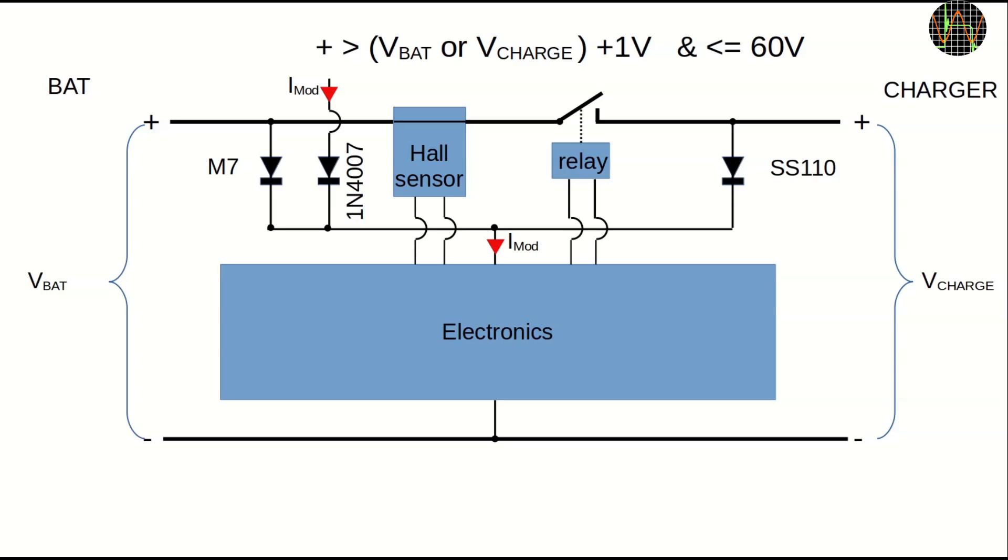But there is a better solution to get rid of the errors introduced by the module current. With a small change, the module can be powered from an external power source and that allows the current sensor to measure only the true charge and load currents. All it takes is adding another diode onto the rail which is connected to the external supply. I chose a 1N4007 which is exactly the same as an M7. Just adding the diode leaves the original design untouched and imposes a condition on the supply voltage in that the external voltage should be slightly higher than the highest VBAT or VCH. If that is fulfilled, the two original diodes will never conduct and therefore all module current is carried by the new diode. If the voltage is lower or no external power is provided, the circuit simply works as it did before.